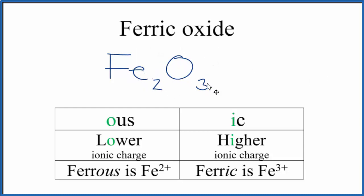This is the formula for ferric oxide: Fe2O3. And we can check this.